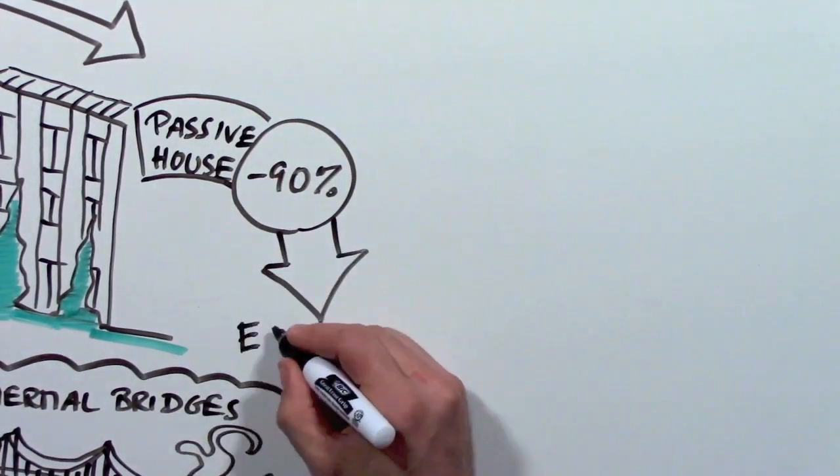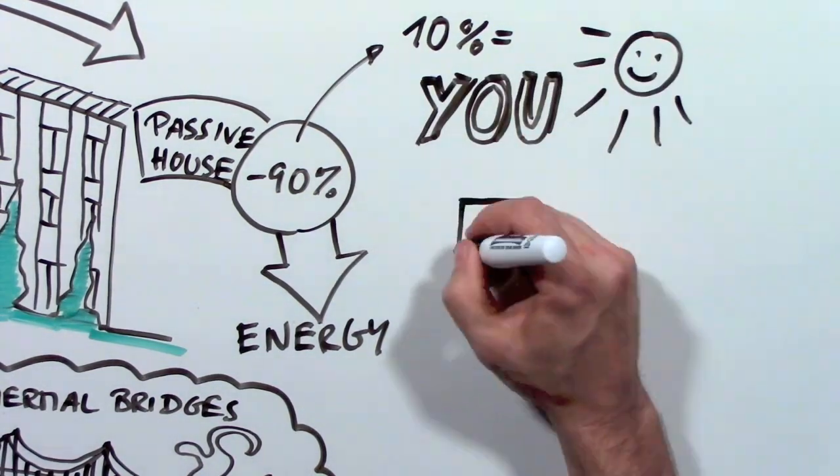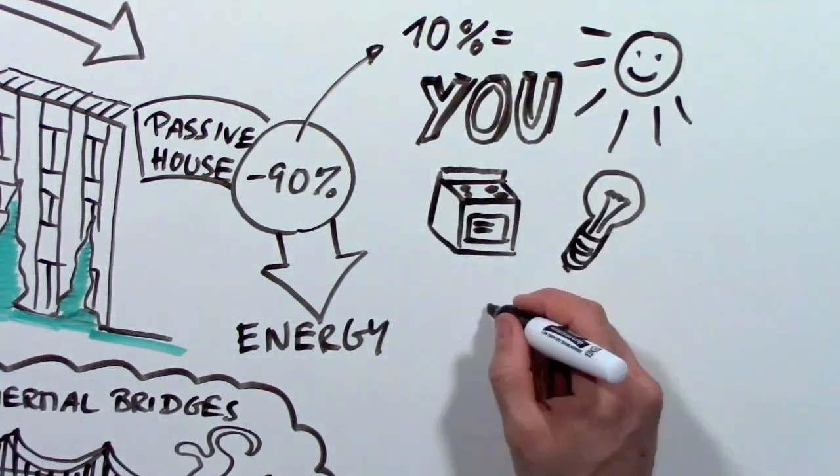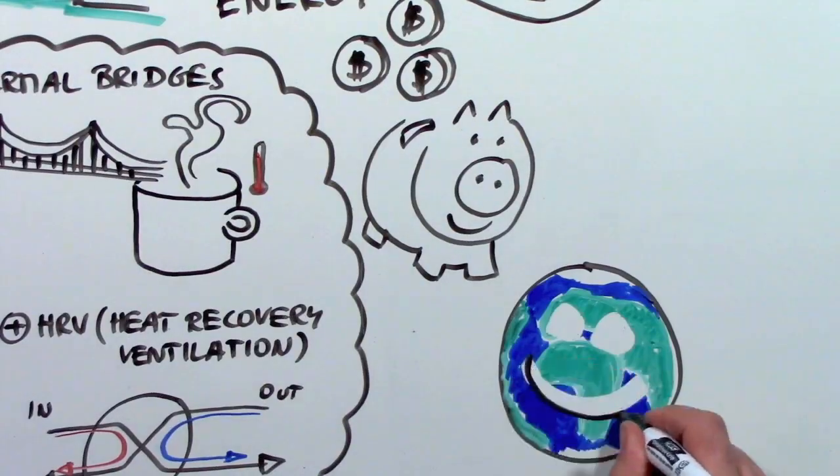A passive house needs 90% less energy and that can easily be supplied by your body heat, the sun, your appliances, light bulbs, and even your TV. This saves you a lot of money on your heating bill and helps preserve the environment.